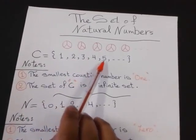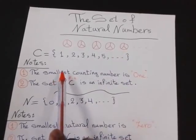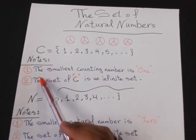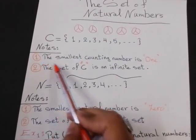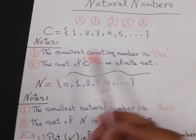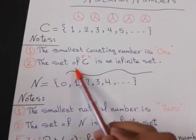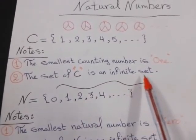1, 2, 3, 4, 5, and so on. Close the braces. We have two notes on the set of counting numbers. The first one is the smallest counting number is 1. Number 2, the set of counting numbers is an infinite set.